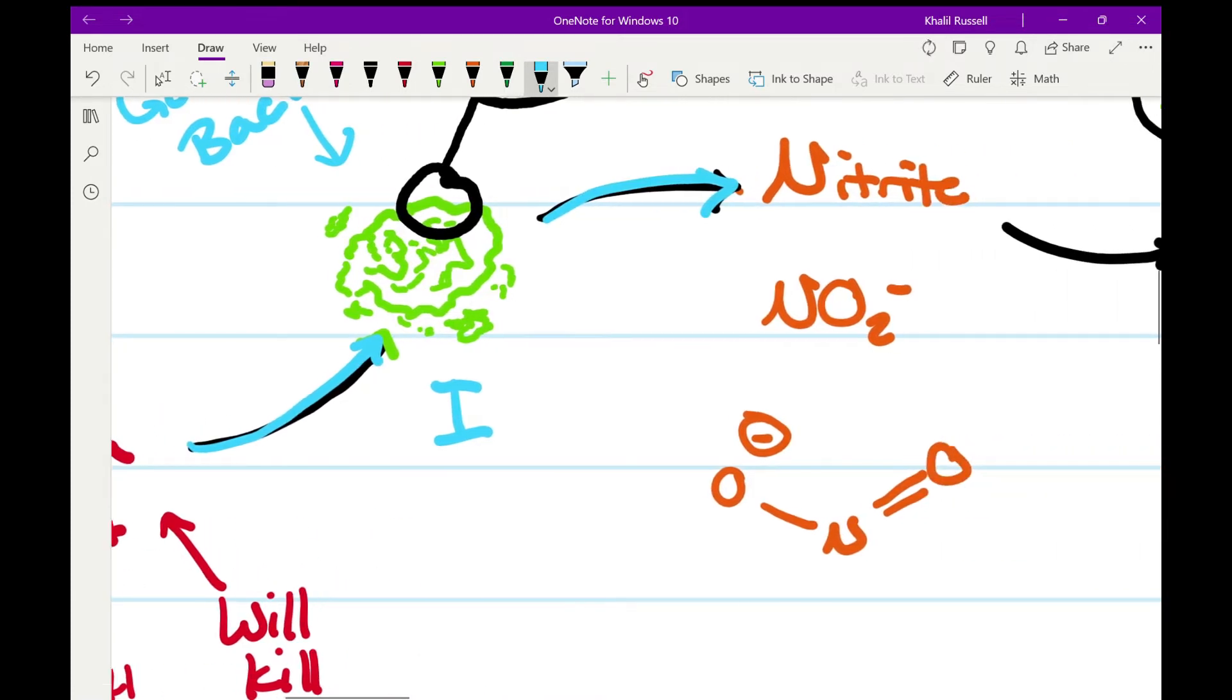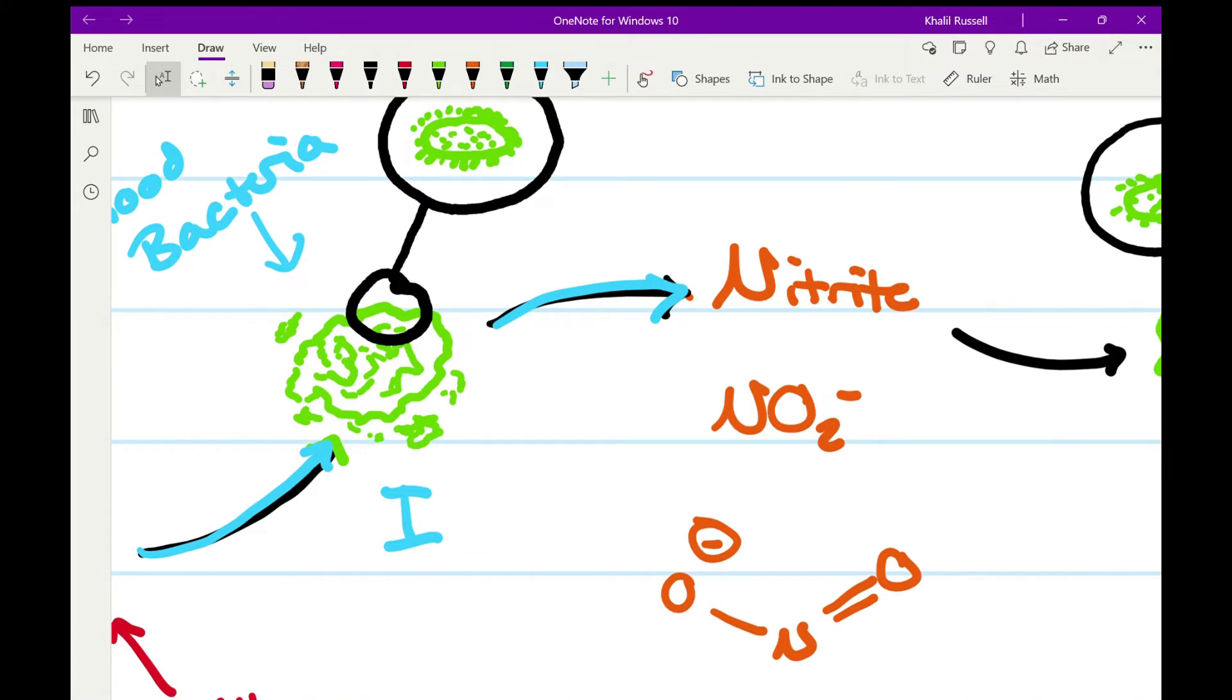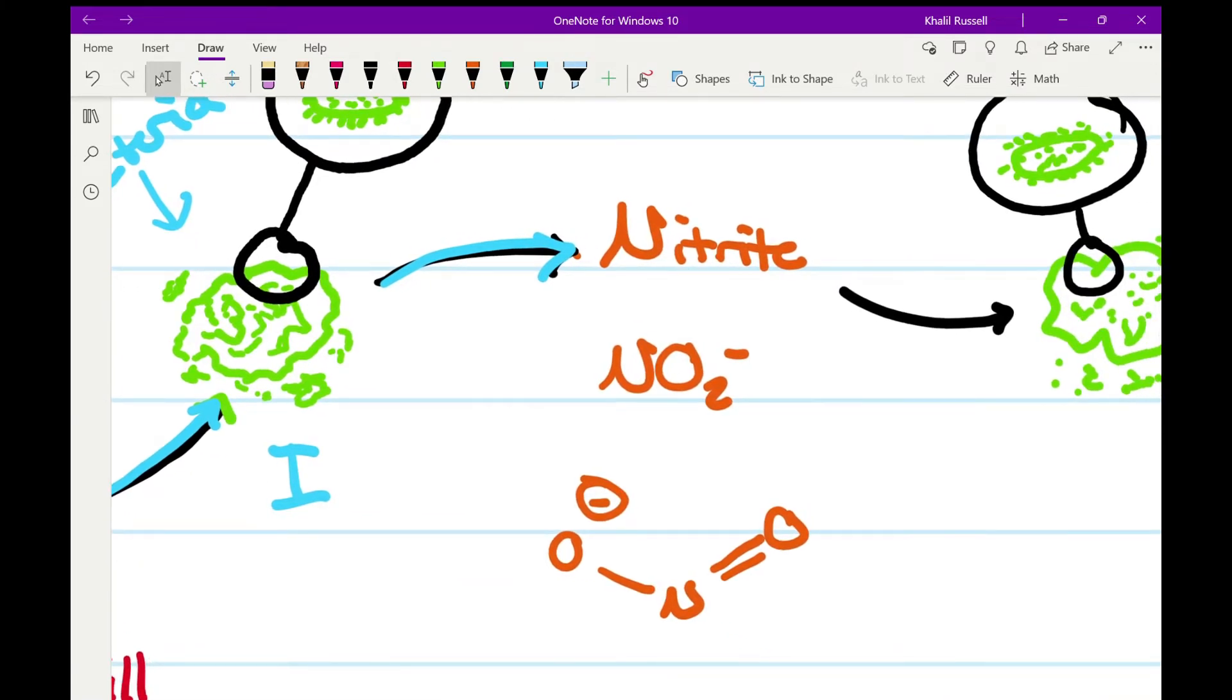So the first step of the nitrogen cycle, you have ammonia turning into nitrites via good bacteria, or bacteria one we'll call it.